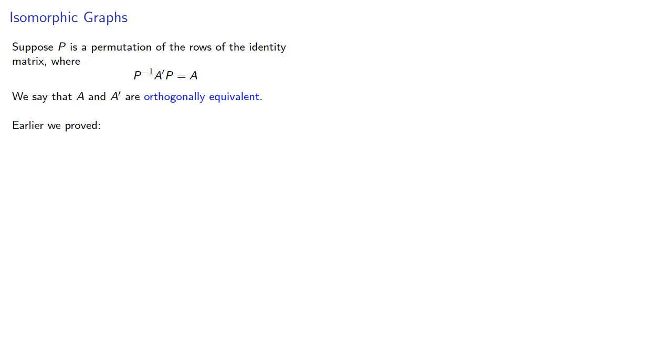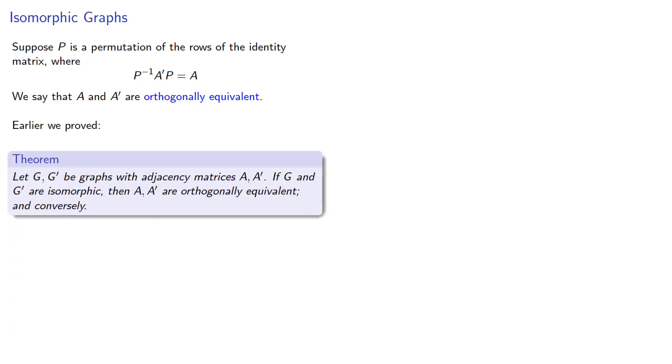Earlier, we proved that isomorphic graphs have orthogonally equivalent adjacency matrices, and conversely, if the adjacency matrices are orthogonally equivalent, then the graphs are isomorphic.